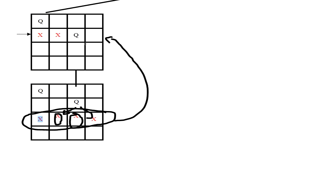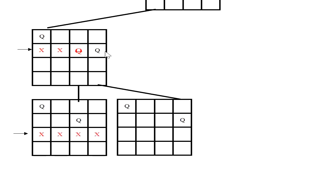We saw that the second queen cannot allow a valid position for the third queen, so we move the second queen to the next position. With the queen in a new position, we draw the next state space tree. In the third row, the first column is blocked by the first queen. But the second column is possible — none of the queens can attack it — so we place the third queen there.